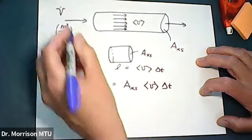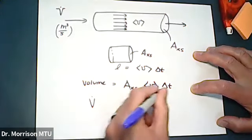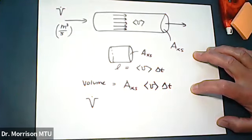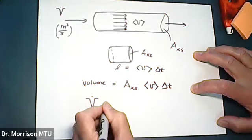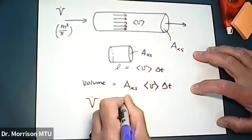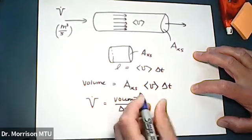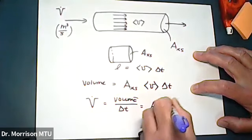And then to get V dot, we're just going to move the delta t to the other side. So the volumetric flow rate, the volume per time, is going to be volume divided by the time interval. And so that's just going to be A_XS times average V.